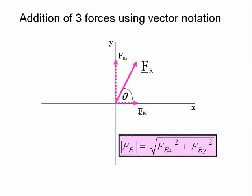The magnitude of FR is given by the square root of FRx squared plus FRy squared. And the direction anticlockwise with respect to the positive x-axis is given by theta equals tan to the minus 1 of FRy divided by FRx.